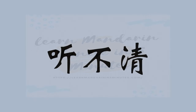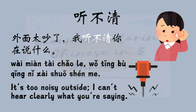听不清 is a Chinese phrase that means 'cannot hear clearly.' It is used when you are unable to catch or discern what someone is saying due to various reasons such as background noise, unclear speech, or a bad connection. For example, 外面太吵了，我听不清你在说什么 — It's too noisy outside, I cannot hear clearly what you are saying.